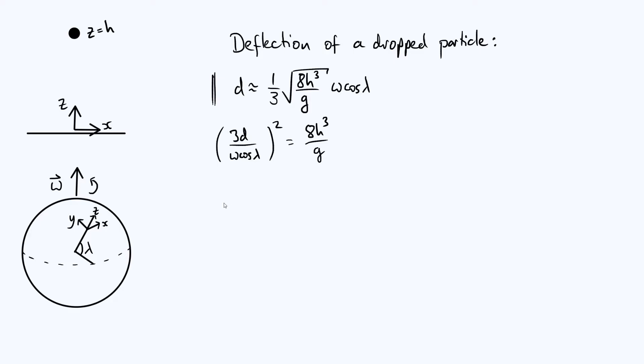And so we can say that h is going to be, well we do g over 8, multiply that by 3d over omega cos lambda all squared, and then all of that stuff is raised to the one third power.